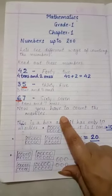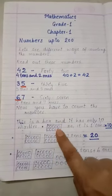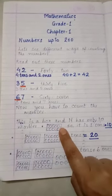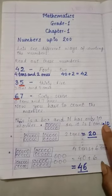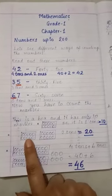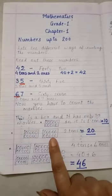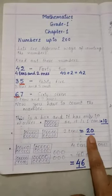Now, you have to count the marbles. This is a box and it has only 10 marbles. So, 1 tens, it is equal to 10. Now, the second one, 1 tens, 2 tens. 2 tens equals to 20.